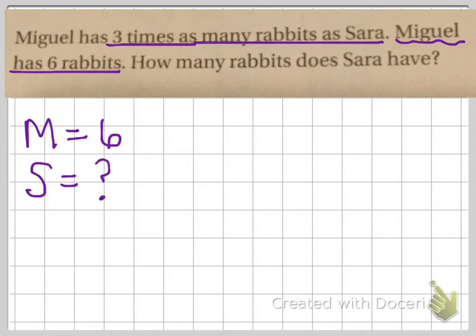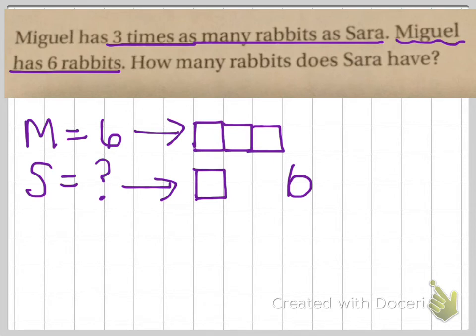So, if I wanted to solve this by using a model and drawing a picture, I could say that Miguel has 3 times as many as Sarah. This represents Sarah. This represents Miguel. We know that Miguel has 6 rabbits and it is 3 times Sarah.